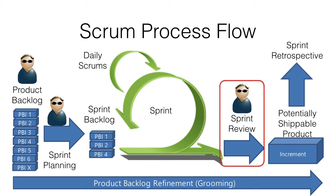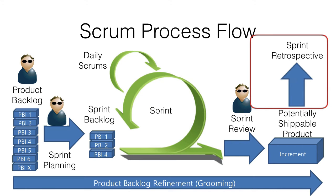After the sprint review, the Scrum team get together and discuss what went well and what didn't go so well in the last few weeks, and make plans to include process improvements in the next sprint. That's the whole Scrum team — the product owner, the Scrum master, and the development team. And again, usual practice is for the Scrum master to facilitate this event.